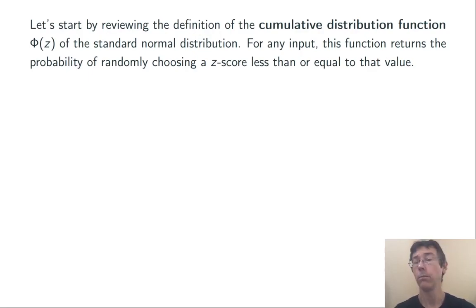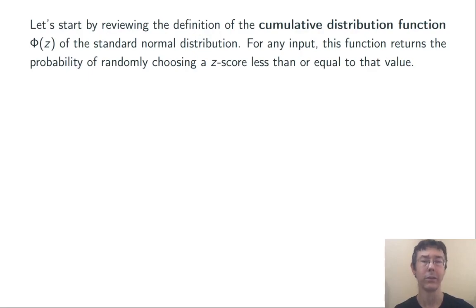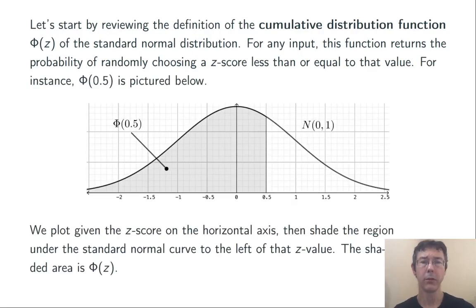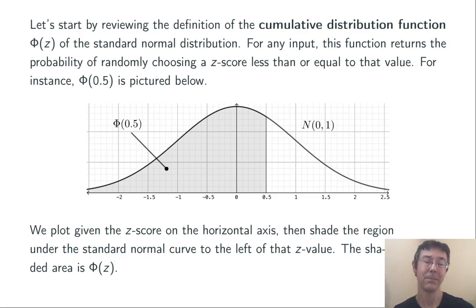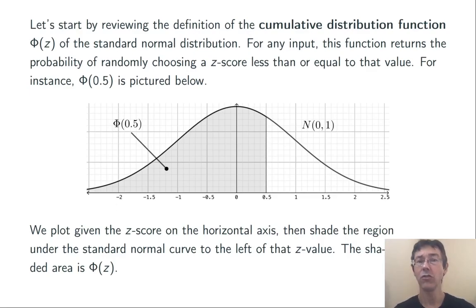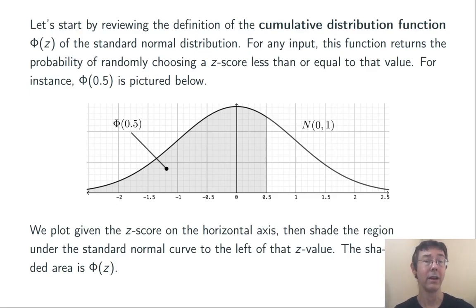The way that works is you feed it a z-score, and it returns the probability that a randomly chosen z-score will come out to be less than or equal to that value. A picture helps a lot here. I've sketched phi of 0.5 by drawing the standard normal bell curve, finding z equals 0.5 — just a little bit to the right of the mean at z equals 0 — and then shading all of the area to the left of that z-score.